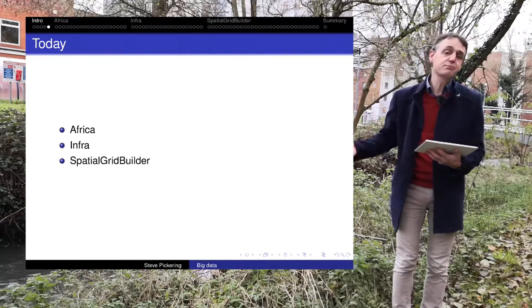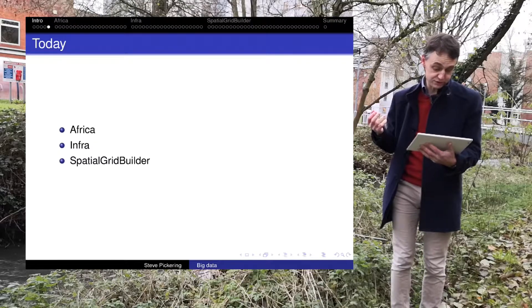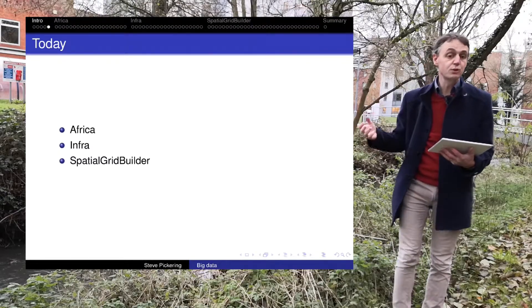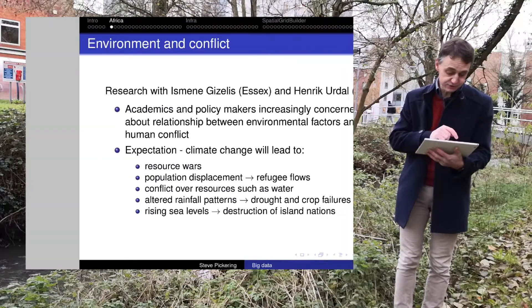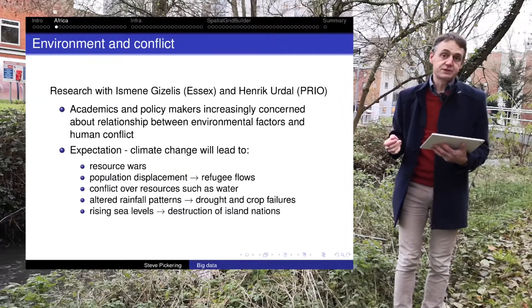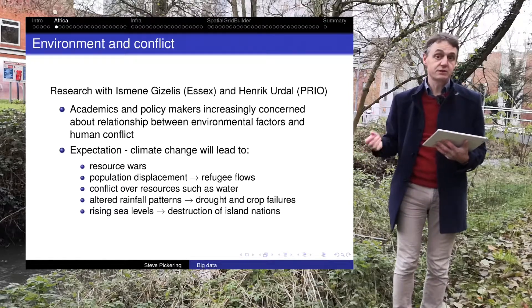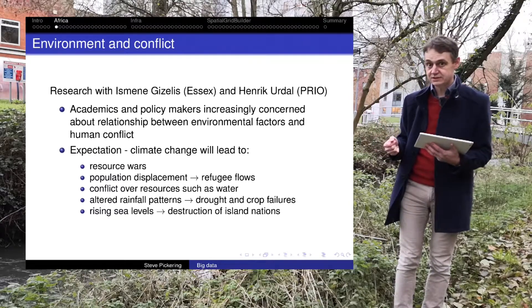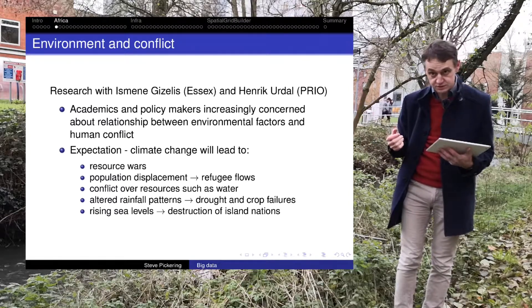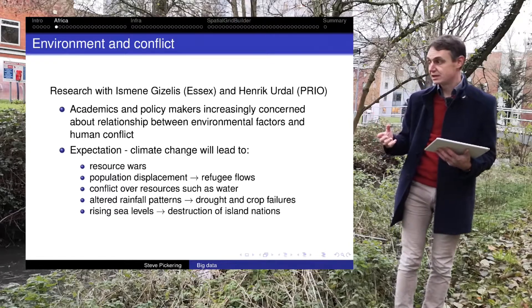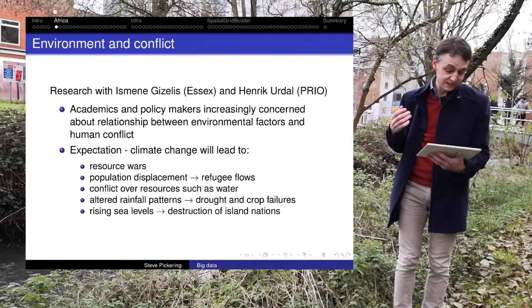Today I'll talk about three projects I've been working on: one on Africa, one to develop an infrastructure measure called Infra, and another — a tool called Spatial Grid Builder that helps you do all this. The Africa research is collaborative. I've been working with my colleagues Iasonas Tzezos at the University of Essex and Henrik Urdal, who is now the director of PRIO, the Peace Research Institute in Oslo. We've been looking at environmental factors and conflict in Africa.